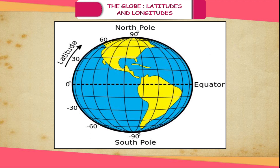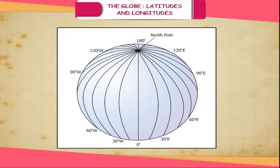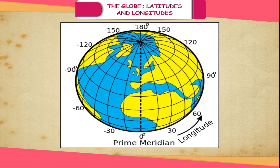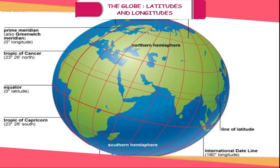The equator represents the zero degree latitude. Since the distance from the equator to either of the poles is one fourth of a circle around the Earth, it will measure one fourth of 360 degrees, that is 90 degrees. Thus, 90 degrees North latitude marks the North Pole and 90 degrees South latitude marks the South Pole.